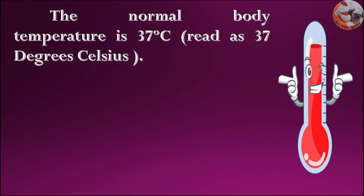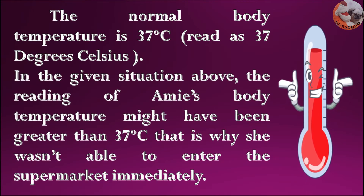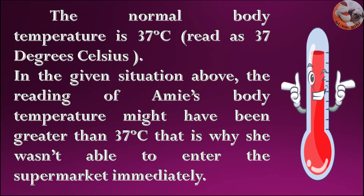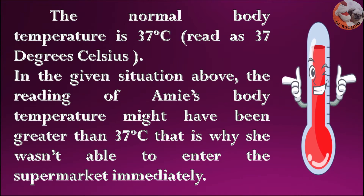The normal body temperature is 37 degrees Celsius. In the given situation above, the reading of Amy's body temperature might have been greater than 37 degrees Celsius. That is why she wasn't able to enter the supermarket immediately.